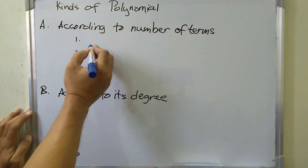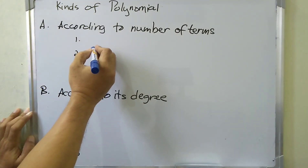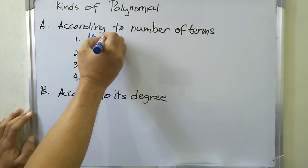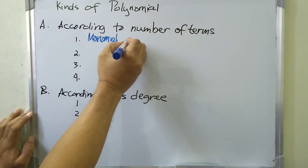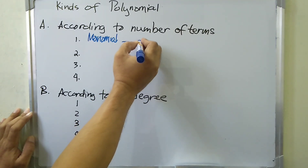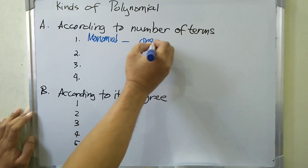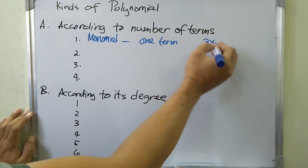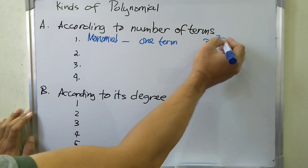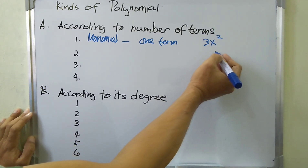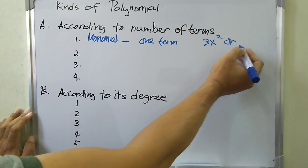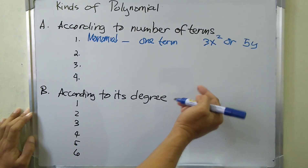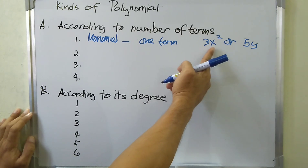The first kind of polynomial according to number of terms is monomial. A monomial has only one term. For example, 3x squared, or we can have 5y — as long as that polynomial has only one term.